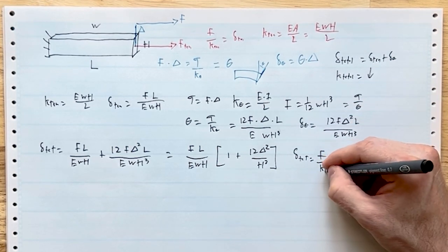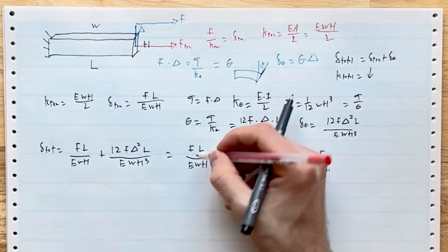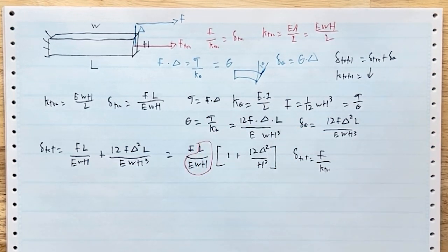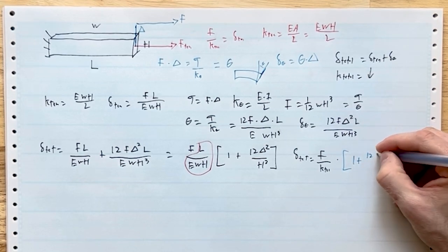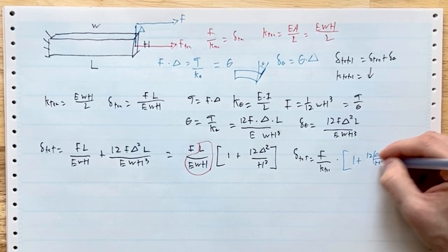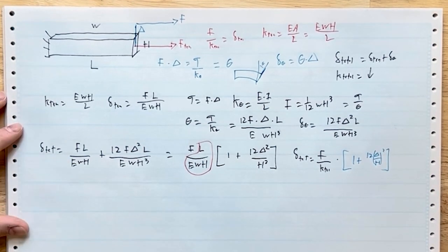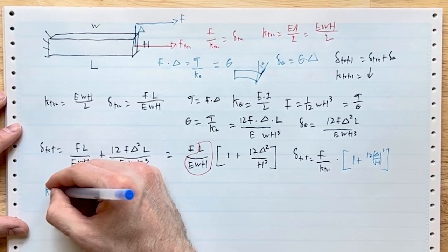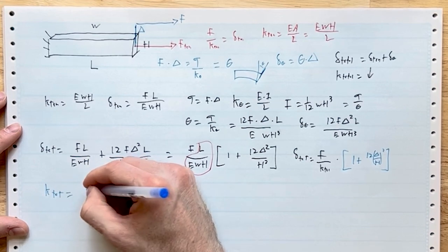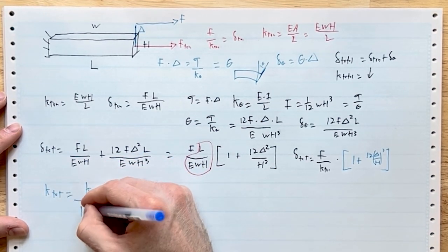So what's going on here? We've basically said that delta_total equals force divided by k_tension, because that L over EWH term, that's just k_tension, times a new term. This new term is 1 plus 12(delta over h)² —this is the eccentricity that is killing our stiffness. The other way to look at it is k_total equals k_tension, which is high, divided by 1 plus 12(big delta over h)². That is the term that's killing us.